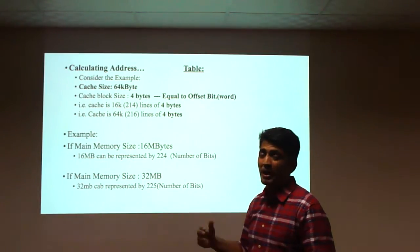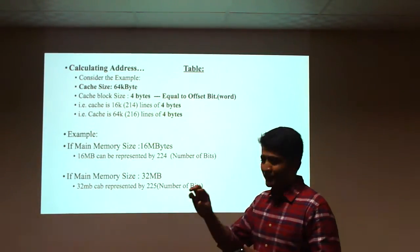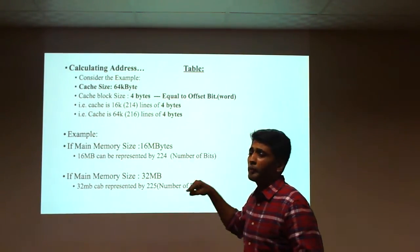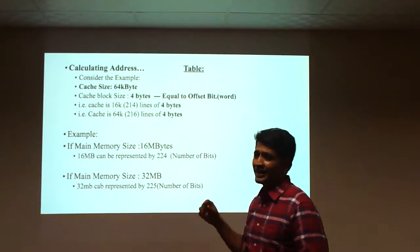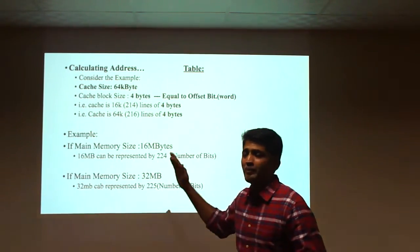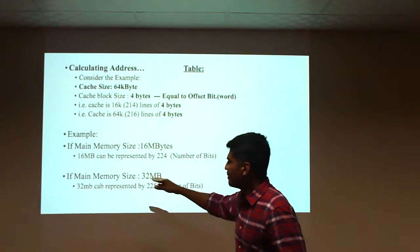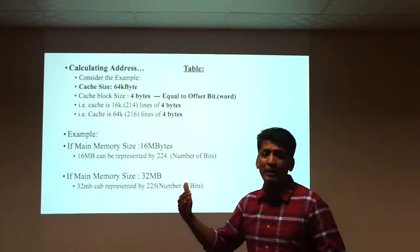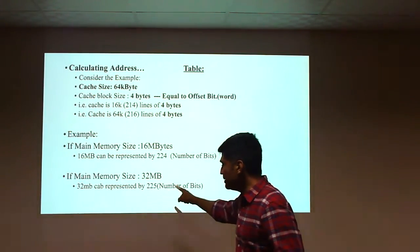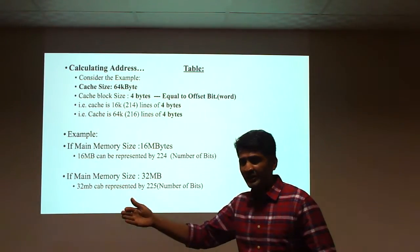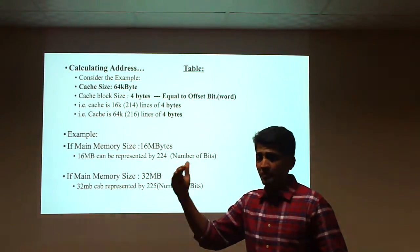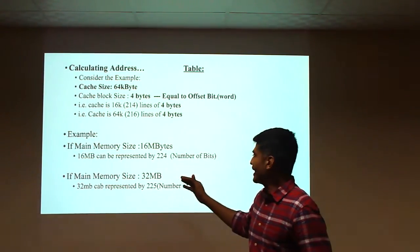For example, if the main memory size is 16 MB, then 2 to the power of 24 is required, meaning a 24-bit address is needed to support a 16 MB main memory. In another example, if the main memory size is 32 MB, then 2 to the power of 25 gives us 25 bits required to represent the 32 MB main memory.